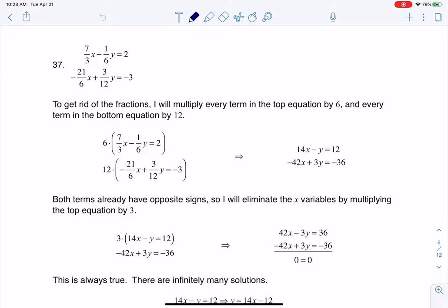To get rid of the fractions, because this is an equation, I could multiply everything by an LCD. On the first equation, I can see that the LCD here is 6, and on the second equation, the LCD is 12. So what I'm going to do is multiply every term in the top equation by 6, and every term in the bottom equation by 12.